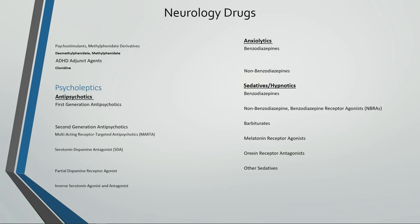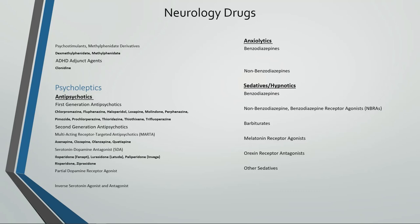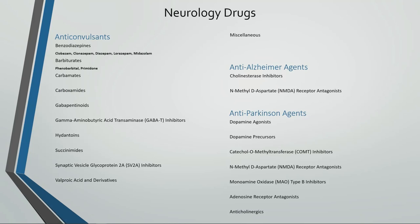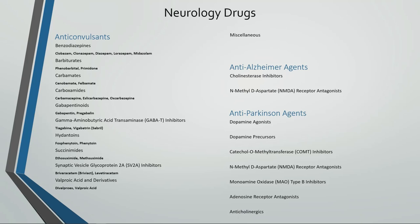Psycholeptics include antipsychotics that are first-generation or second-generation antipsychotics, including multi-acting receptor-targeted antipsychotics, serotonin-dopamine antagonists, partial dopamine receptor agonists, inverse serotonin agonists, and antagonists. There are also anxiolytics including benzodiazepines and non-benzodiazepines. Sedatives or hypnotics include benzodiazepines, non-benzodiazepine benzodiazepine receptor agonists or Z-drugs, barbiturates, melatonin receptor agonists, orexin receptor antagonists, and other sedatives. Anticonvulsants include benzodiazepines, barbiturates, carbamates, carboxamides, gabapentinoids, GABA inhibitors, hydantoins, succinamides, synaptic vesicle glycoprotein 2A inhibitors, valproic acid and derivatives, and miscellaneous anticonvulsants.